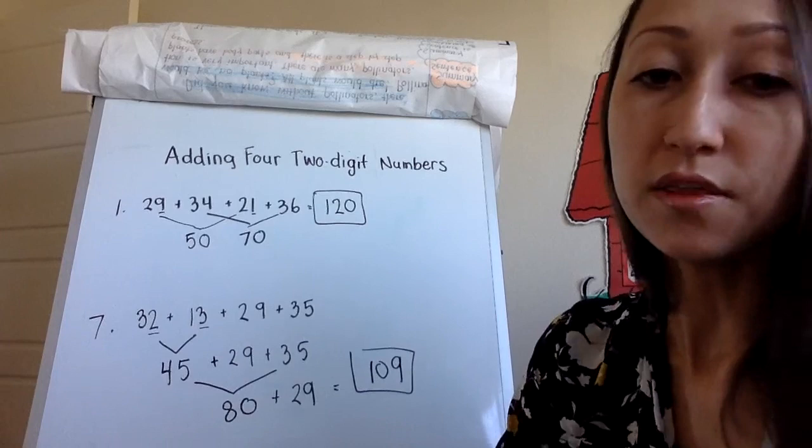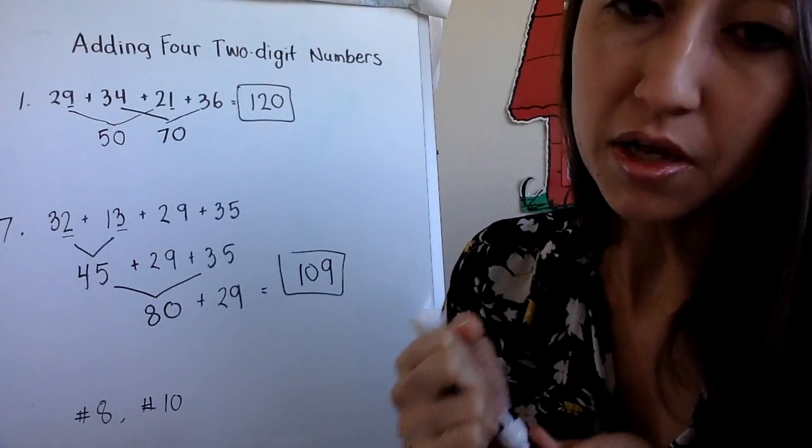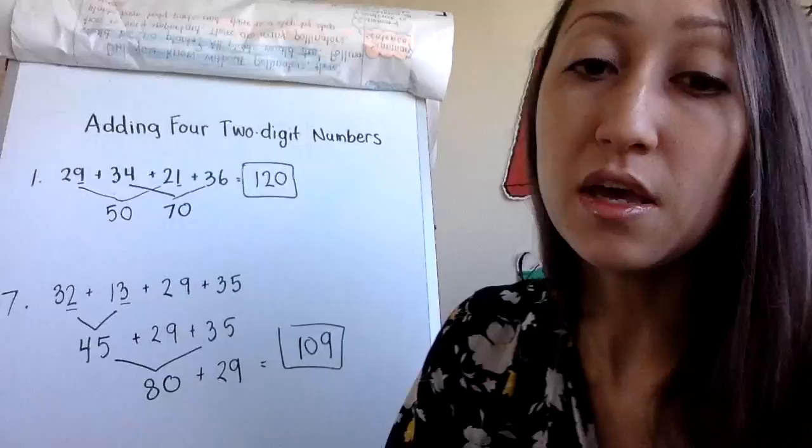You're going to have some other problems like problems 8 and 9 that have that similar strategy that you're going to use, where you're going to have to find friendly pairs to make ten. It might not just involve two sets of numbers, but it might involve you adding three together to make your friendly pair. Try that strategy out today.